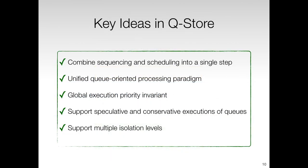Q-Store combines sequencing and scheduling into a single-step phase called planning. This phase produces queues capturing the schedule of transaction executions. Q-Store provides a unified queue-oriented transaction processing paradigm for parallel and concurrent execution of transactions. Q-Store enforces a global execution priority invariant for execution threads to ensure strict serializable execution. Also, Q-Store provides support for speculative and conservative execution of queues as well as support for multiple isolation levels.